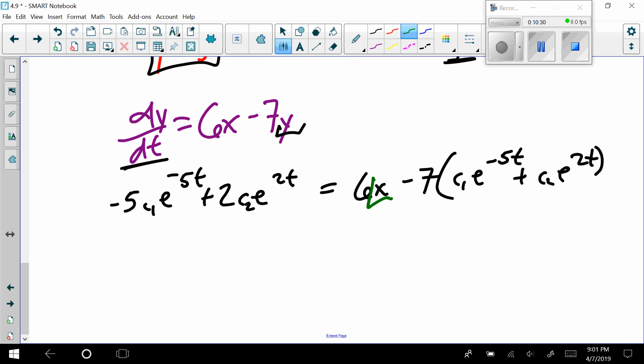If I were to do that, I'd have negative 5 c sub 1 e to the negative 5t plus 2 c sub 2 e to the 2t equals 6x minus 7(c sub 1 e to the negative 5t plus c sub 2 e to the 2t). Goal, at this point, get this thing by itself. What would I do? I would distribute this. Make it negative 7 c sub 1, but then I'd bring it over here. So, really, it's just plus 7 c sub 1 e to the negative 5t. This would make another negative 7, but I'll bring it over. This is plus 7 c sub 2 e to the 2t. These add up. This could be 2 c sub 1 e to the negative 5t plus 9 c sub 2 e to the 2t equals 6x.